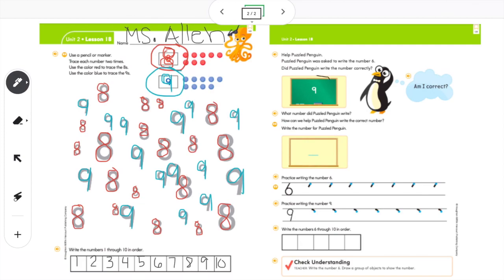Give me a thumbs up if he wrote the number six here. Give me a thumbs down if it is not the number six. No, I don't think so either. He is very confused. What number did Puzzled Penguin write? Looks like a nine to me. We just practiced our nines on the front, remember? Right here? Those two numbers match. Puzzled Penguin drew a nine instead of a six.